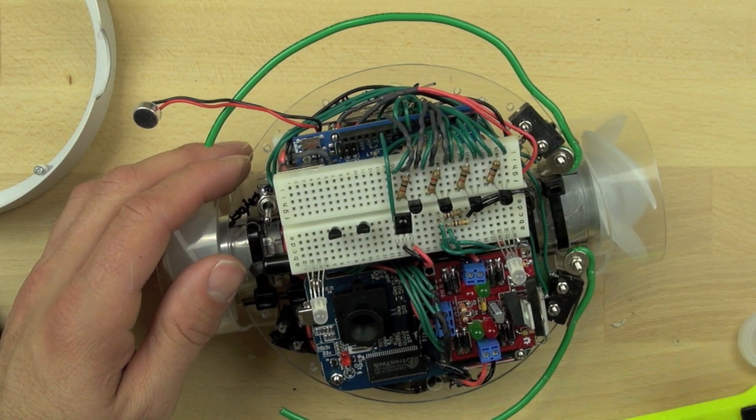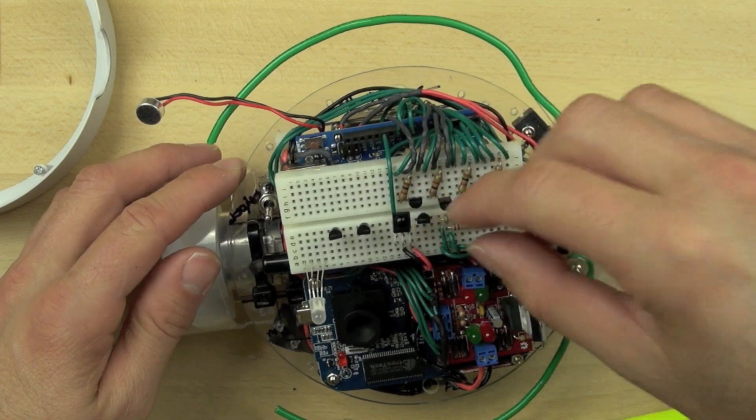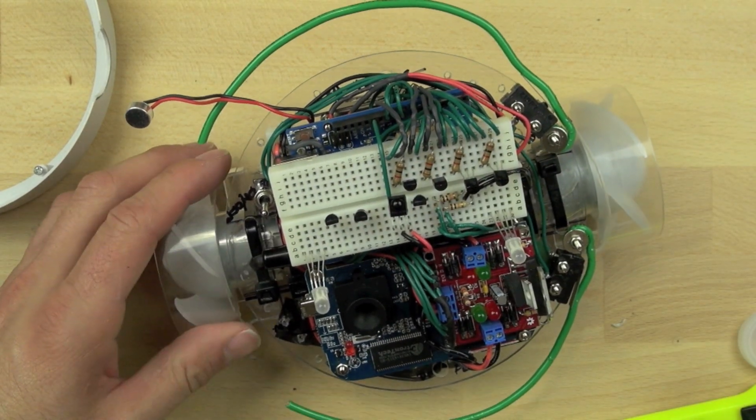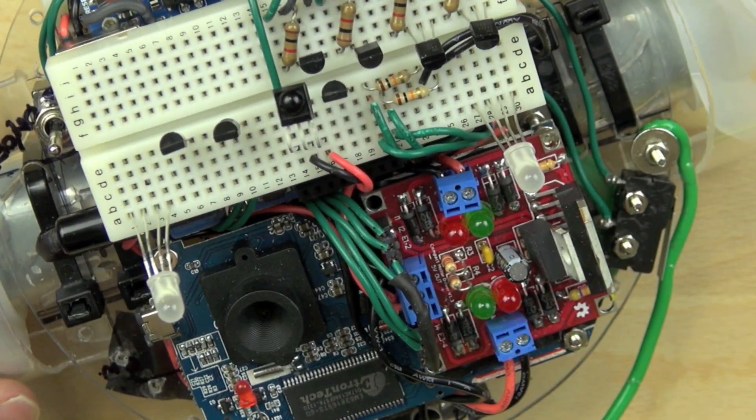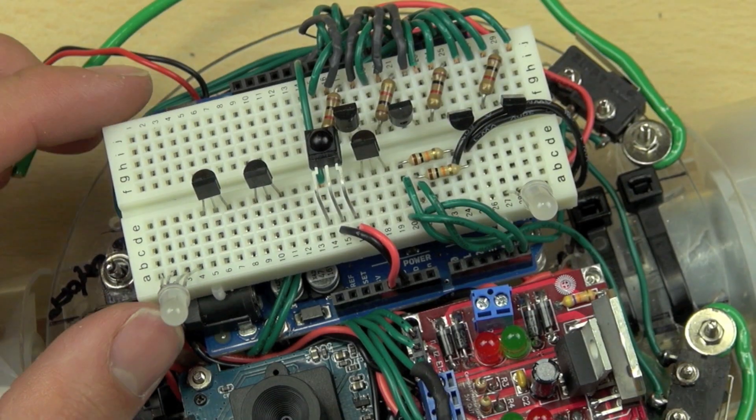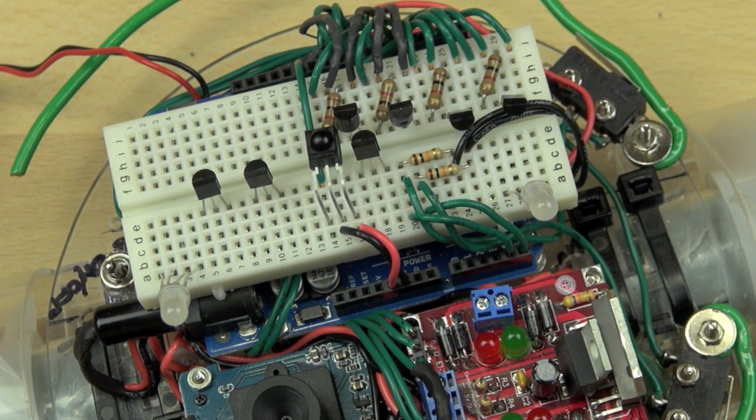Now we're connecting three transistors. These transistors are the same NPN type transistors that we used for our sound module and for our camera to turn them on and off and trigger their functions.